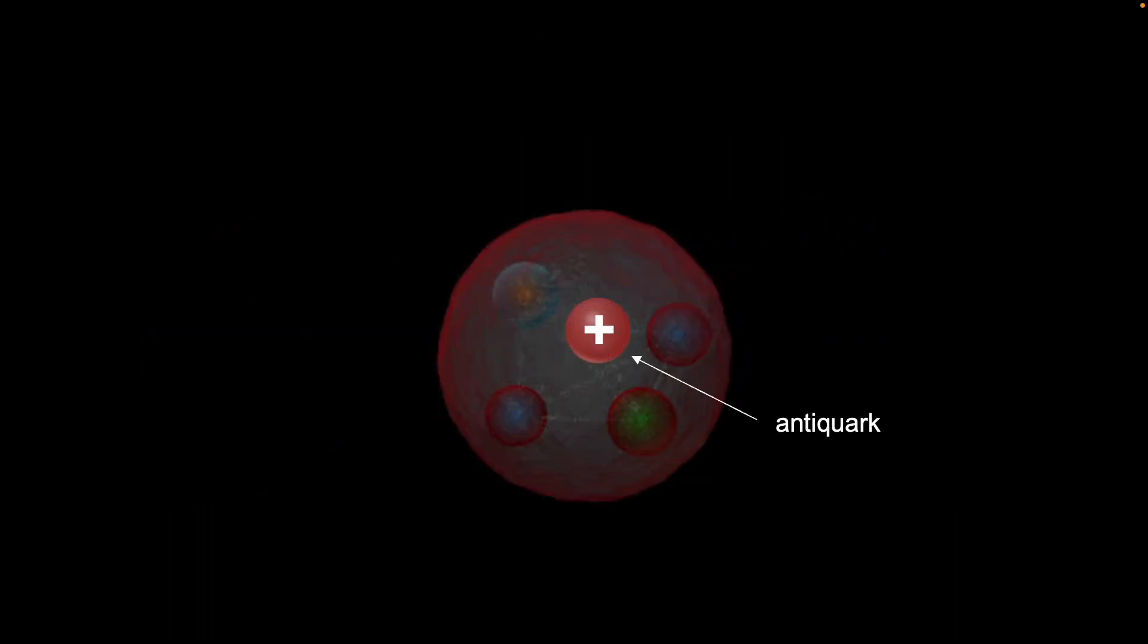Now let's use this new structure of the proton to explain the atom, beginning with the one antiquark in the proton. Let's give it a positive charge. What would happen to an electron that is negatively charged?